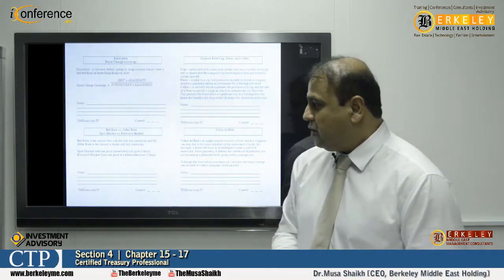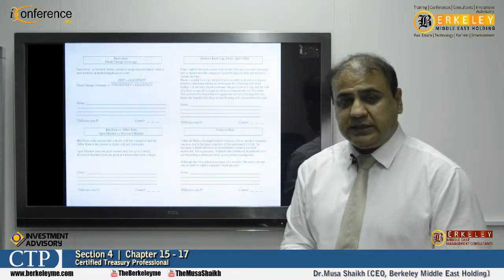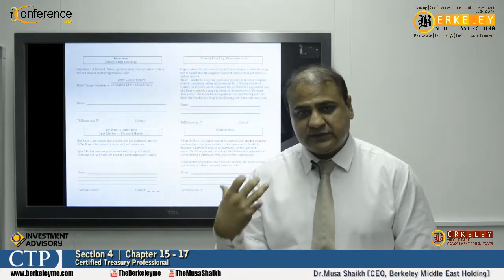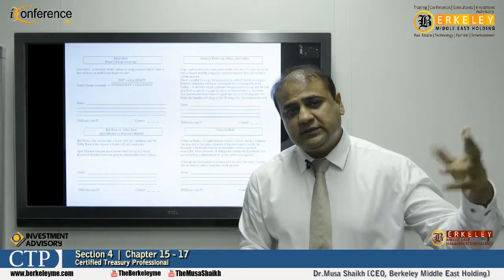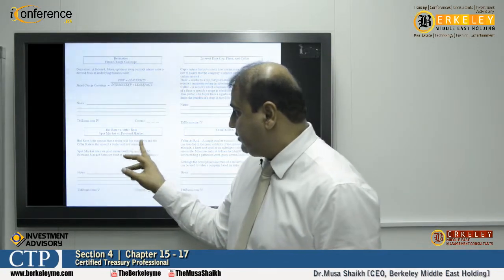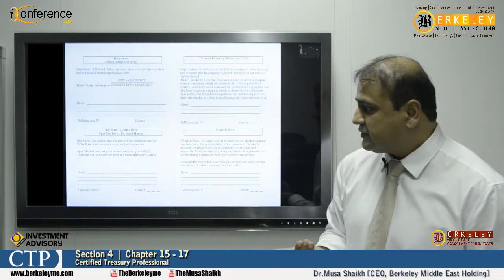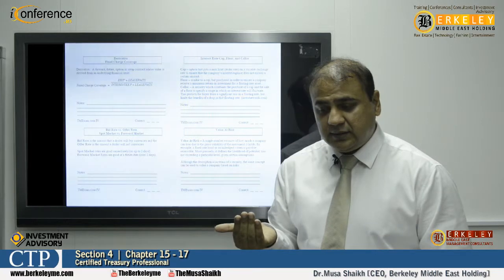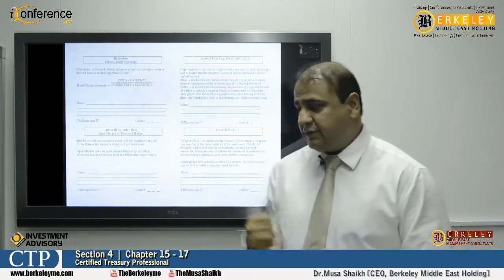We have bid rates, offer rates, spot markets, and forward markets. A spot rate is today's rate. A rate after 30 or 60 days is a forward rate. The bid rate is the amount at which a dealer will buy currency, and the offer rate is the rate at which they sell currency. So when we sell, it's an offer; when we buy, it's a bid.